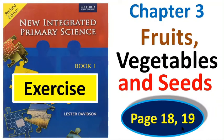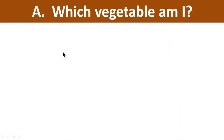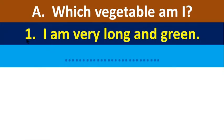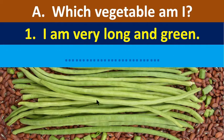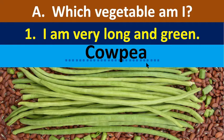Page number 18 and 19. Question number A: Which vegetable am I? Number one: I am very long and green. This vegetable is very long and its color is green, so I am cowpea.